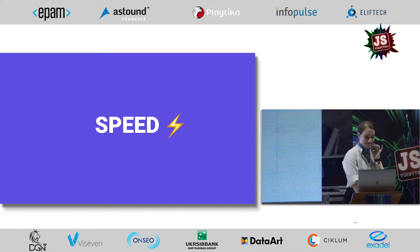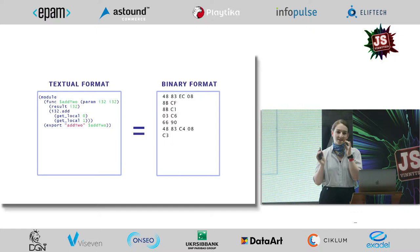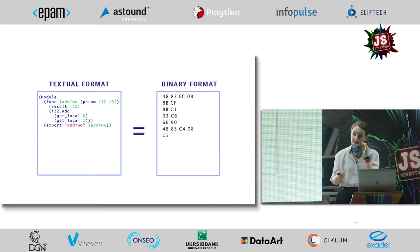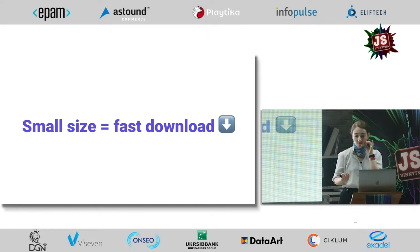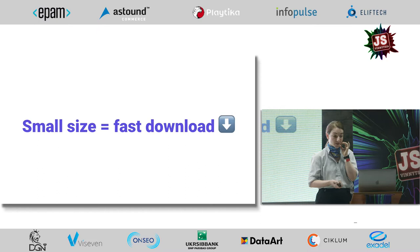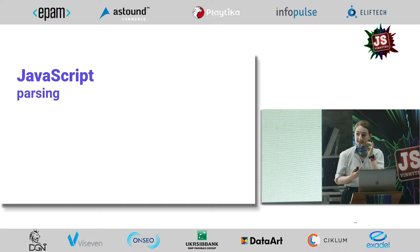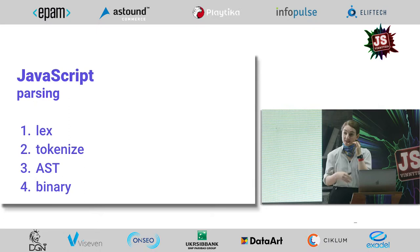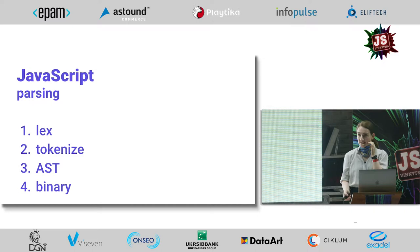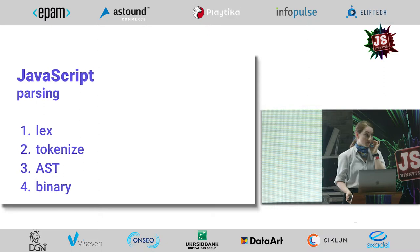Let's talk about speed first. WebAssembly is a low-level binary format. It has a textual format that's kind of easy to read — you could write it by hand, but it's really meant for debugging. The binary format is what gets delivered to the browser. Binaries are smaller than textual files, which makes them faster to download, and this is really important on slow networks. The fact that JavaScript is text means it requires parsing, and transforming plain text into binary format involves quite a few steps: lexing, tokenizing, taking that into an abstract syntax tree, and then turning that into binary format.